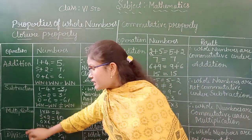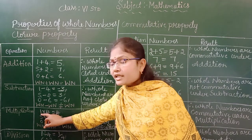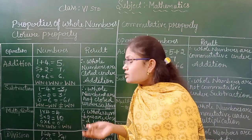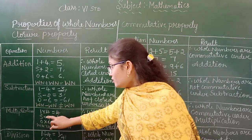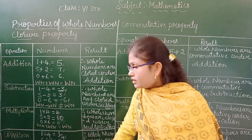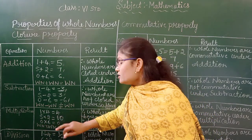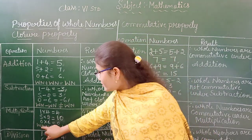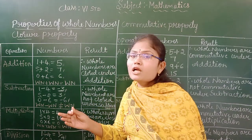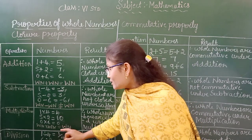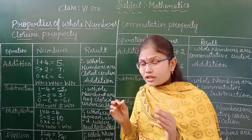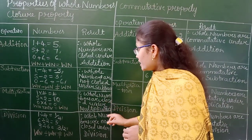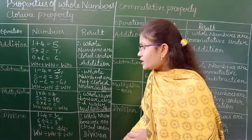Next, moving on to multiplication. Here I have taken 1 times 4, 5 times 10, and 0 times 6 equals 0. Any number multiplied by 0 gives 0. If you multiply any two or more whole numbers, the product is also a whole number. So whole numbers are closed under multiplication.